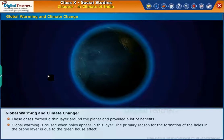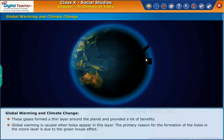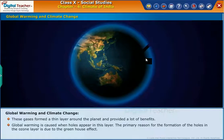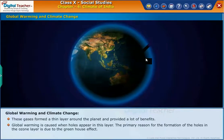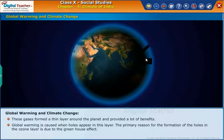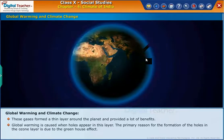Global warming is caused when holes appear in this layer. The primary reason for the formation of holes in the ozone layer is due to the greenhouse effect.